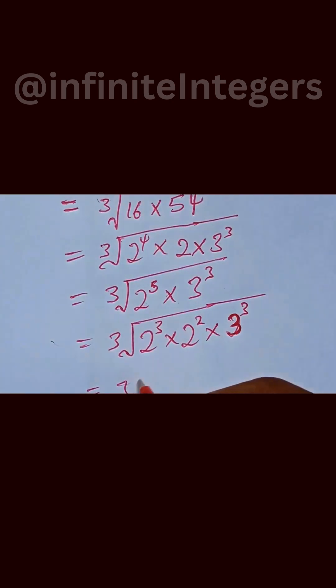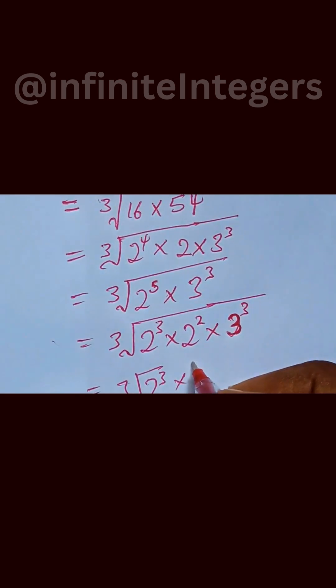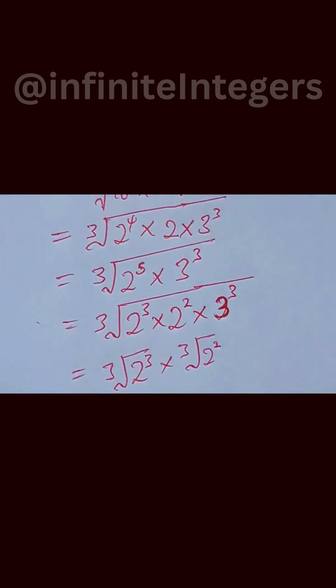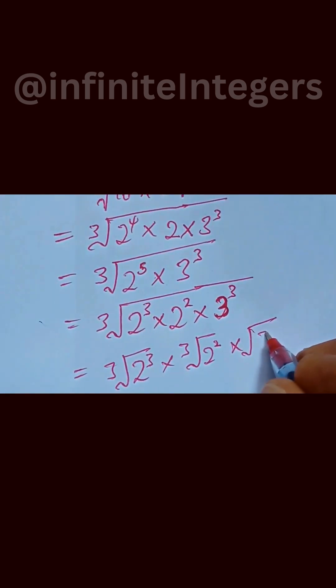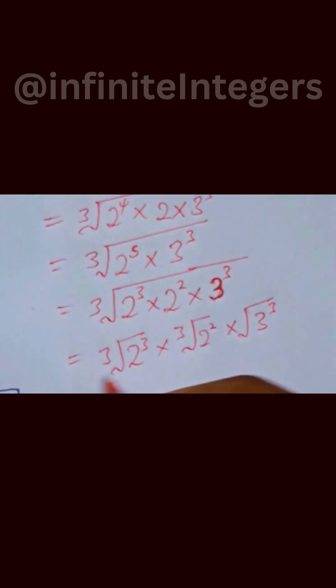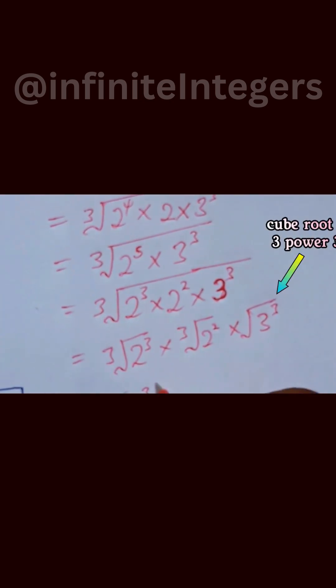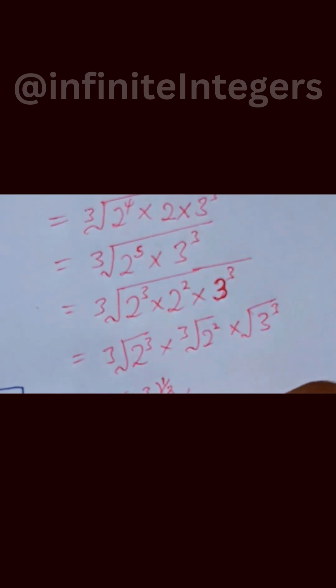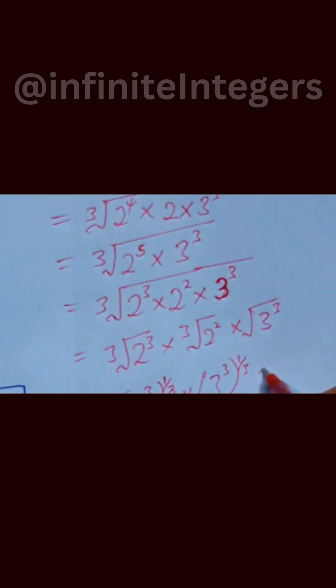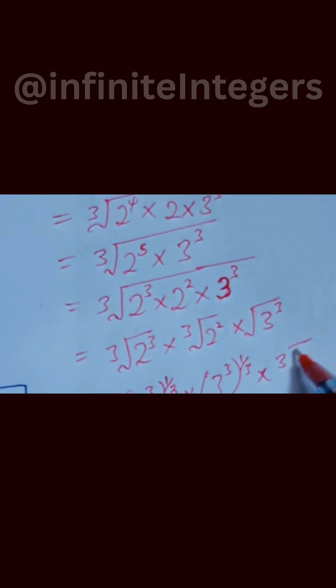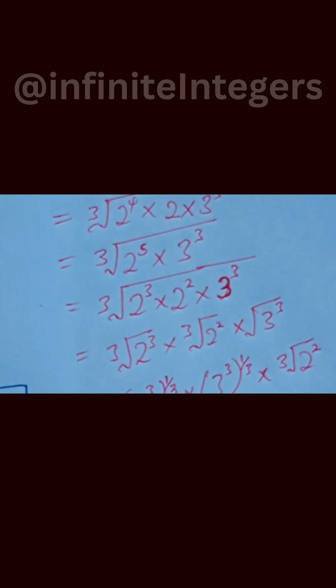We can now split these separately: cube root of 2 raised to power 3, multiplied by cube root of 2 raised to power 2, then cube root of 3 raised to power 3. This can be expressed as 2 raised to power 3 in brackets to the power of 1 over 3, multiplied by cube root of 2 raised to power 2.